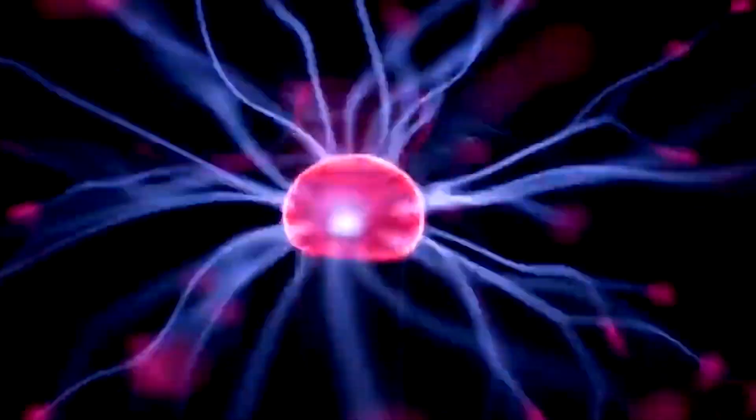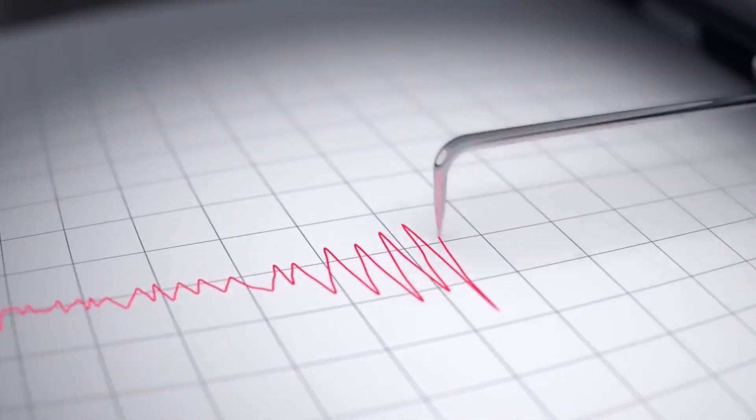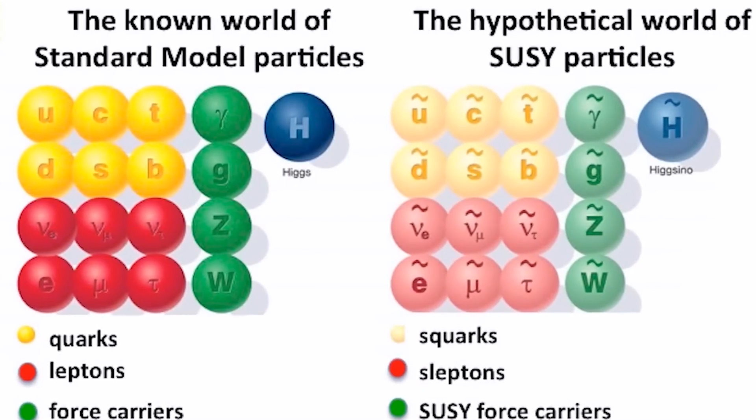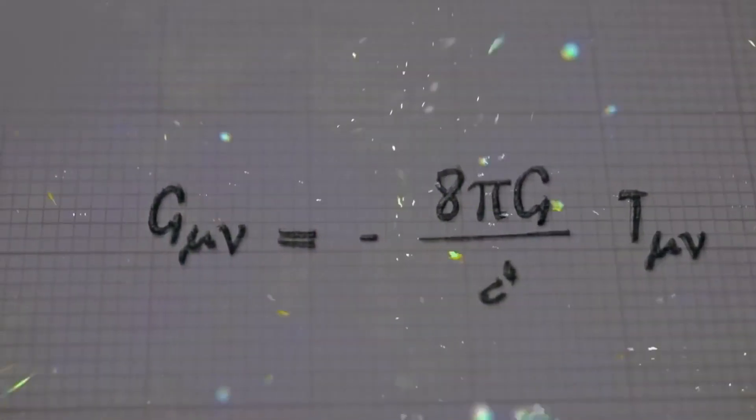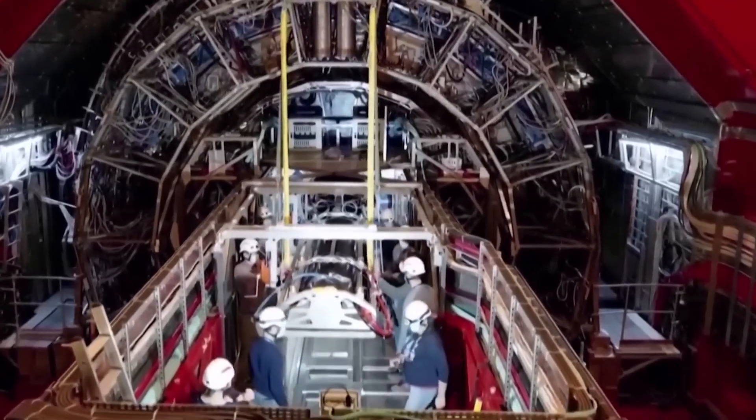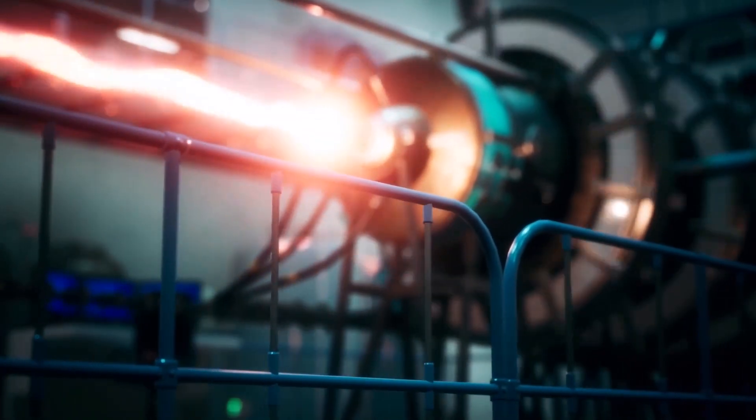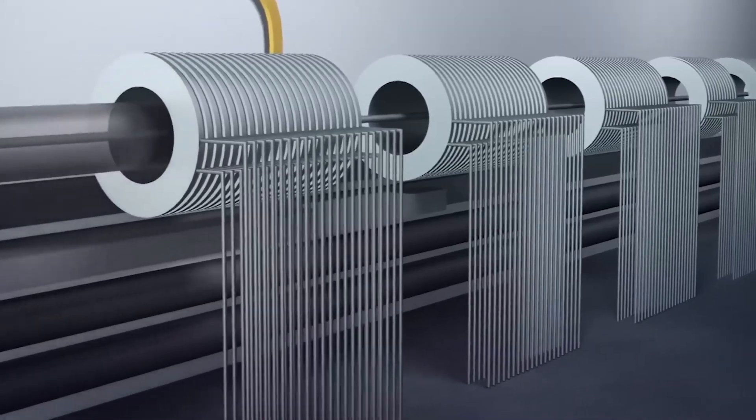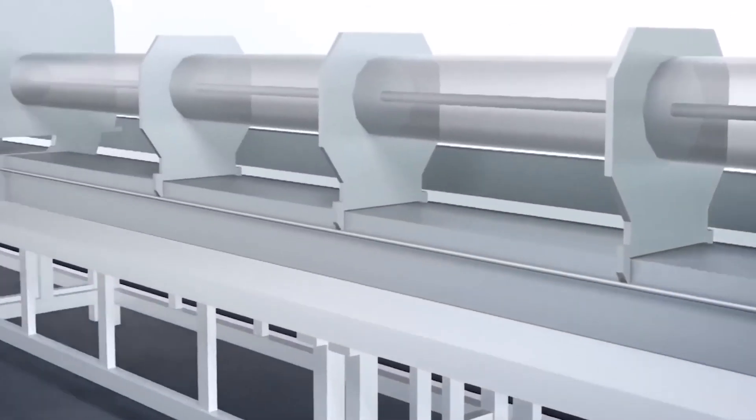The Higgs boson was proposed in 1964 by Peter Higgs and Francois Englert and four other theorists to clarify why certain particles have mass. Scientists substantiated its presence in 2012 through the Atlas and CMS experiments at the Large Hadron Collider at CERN in Switzerland. This finding led to the 2013 Nobel Prize in Physics being awarded to Higgs and Englert.